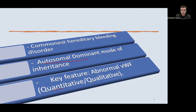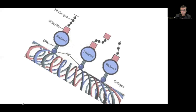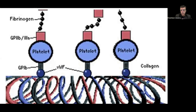Von Willebrand disease could be a quantitative or qualitative defect. The key function of Von Willebrand factor is the GPIb platelet adhesion to the subendothelial collagen. Subendothelial collagen, which gets exposed with injury, is adhered to the platelet GPIb complex by Von Willebrand factor — it acts as a bridge between platelet GPIb and subendothelial collagen.